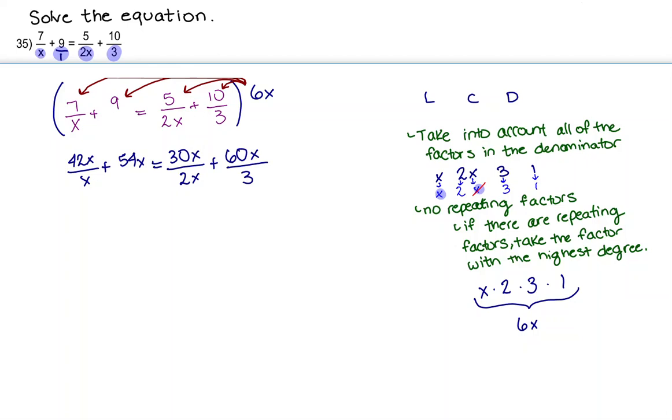Now let's go ahead and simplify as much as we can. So here our x's cancel out. Here our x's cancel out, as well as the 30 over 2, leaving us with 15 on top. And then here the 60 can be divided by 3, leaving us with 20 on top. So when I rewrite my equation, I have 42 plus 54x is equal to 15 plus 20x.